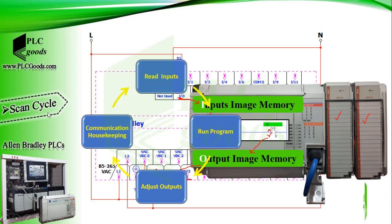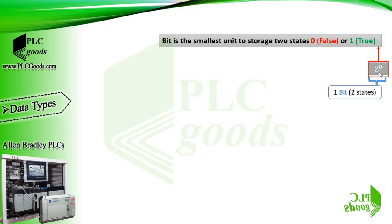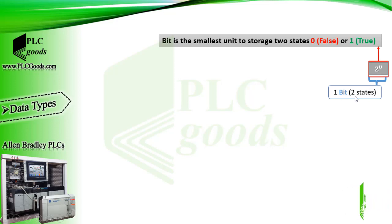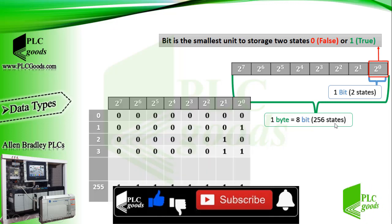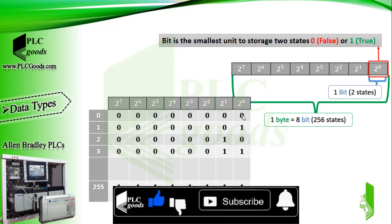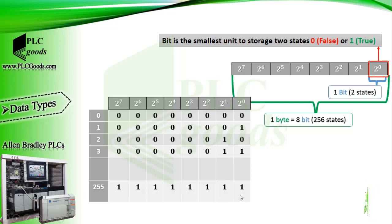In an industrial process the user program needs to know equipment and signal status. A bit is the smallest unit of storage with two states: zero (false) or one (true). A digital input only has two states, so it needs one bit in PLC memory. If we have eight bits it's called a byte. One byte can store 256 states — from zero with eight zeros, up to two hundred and fifty-five.